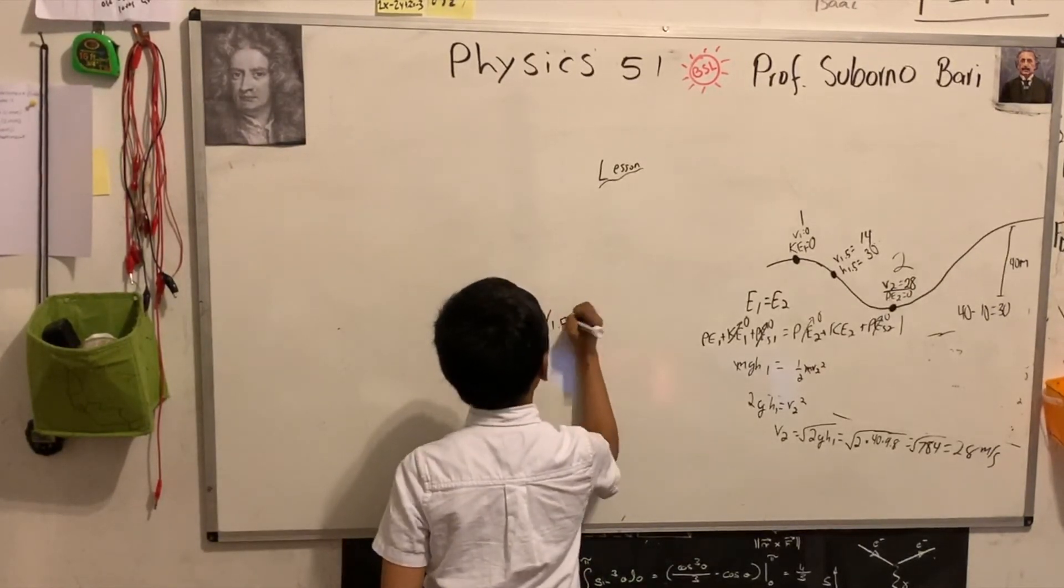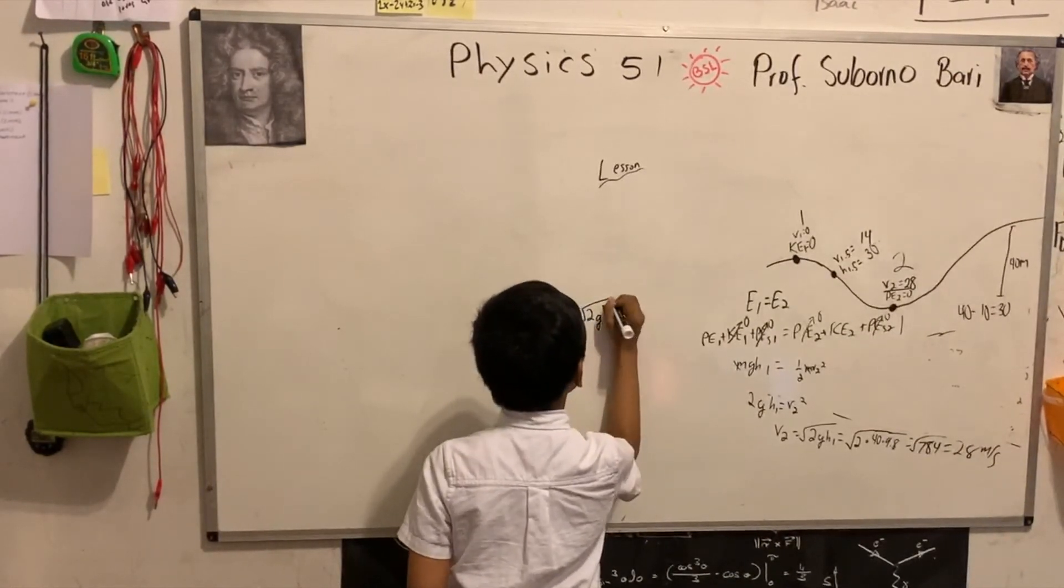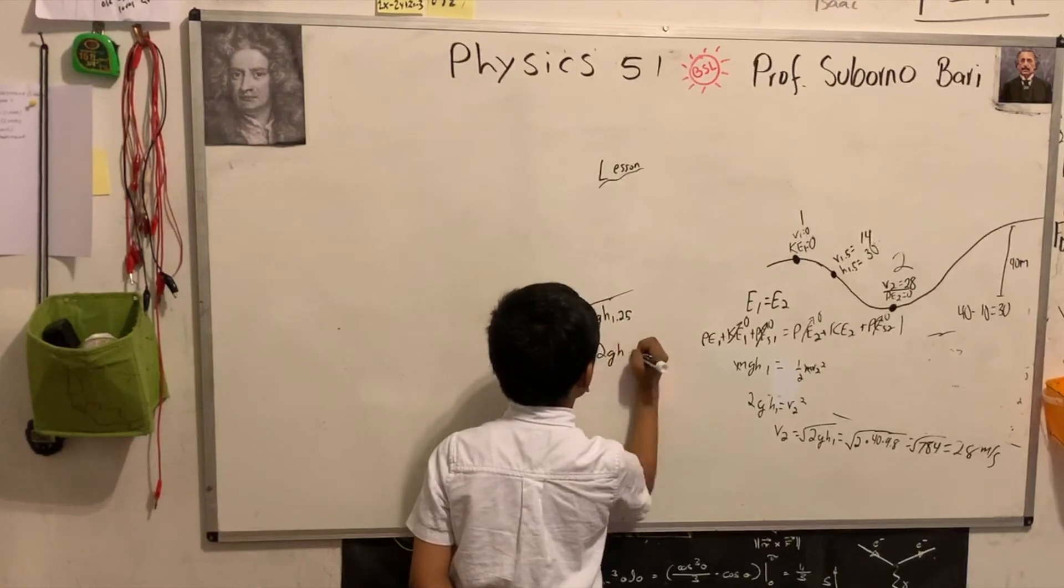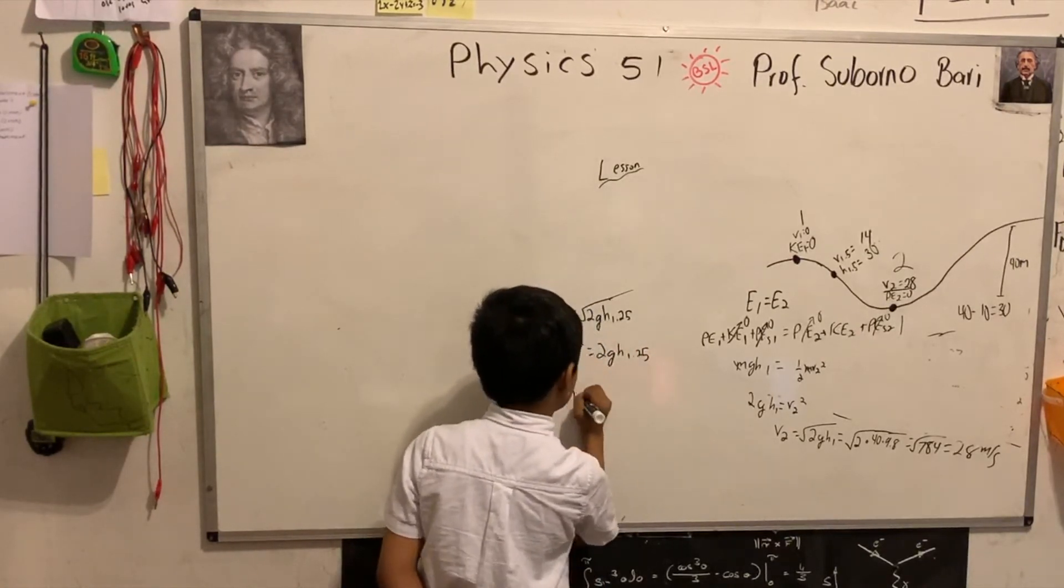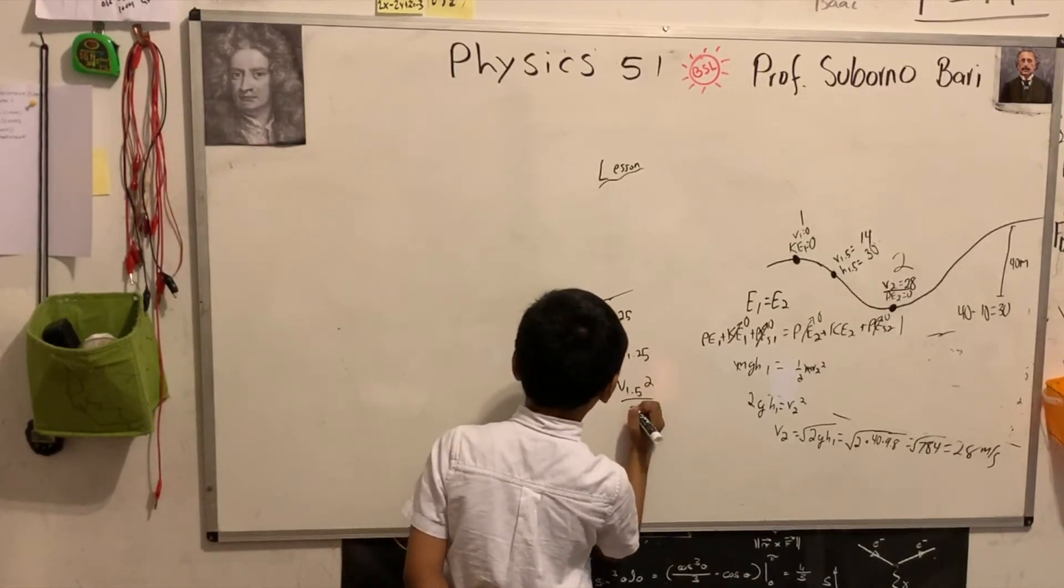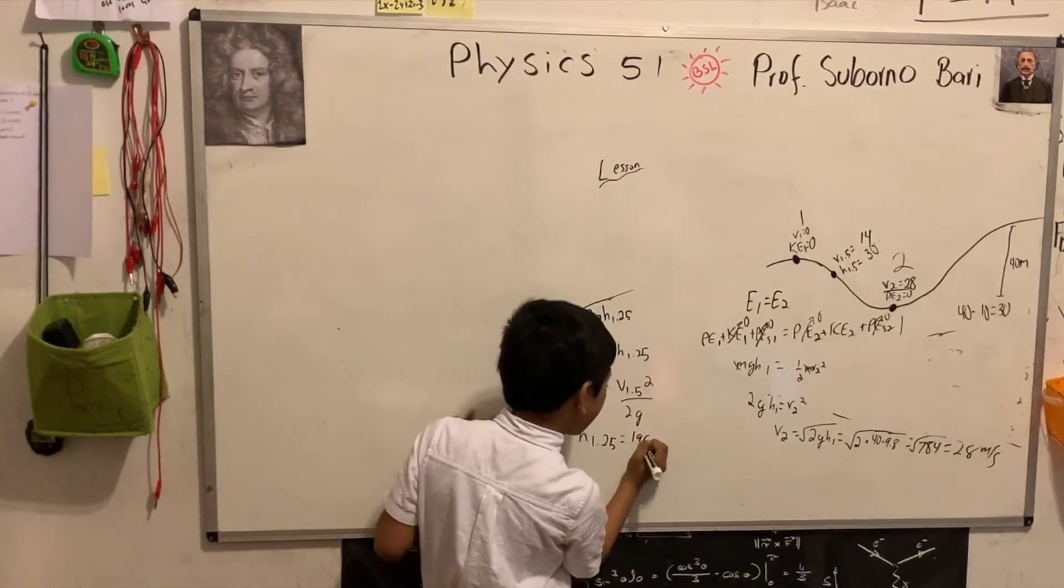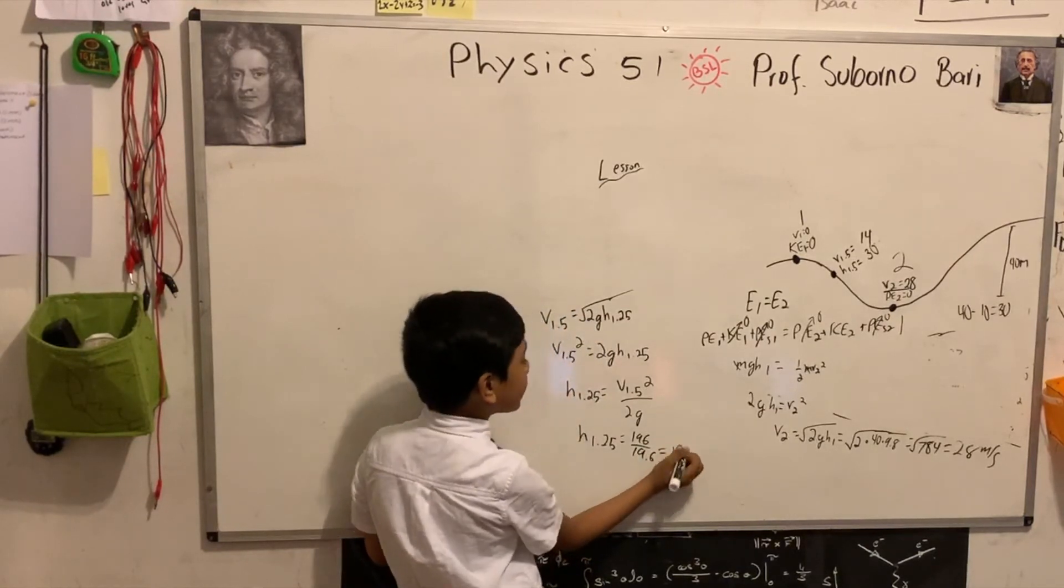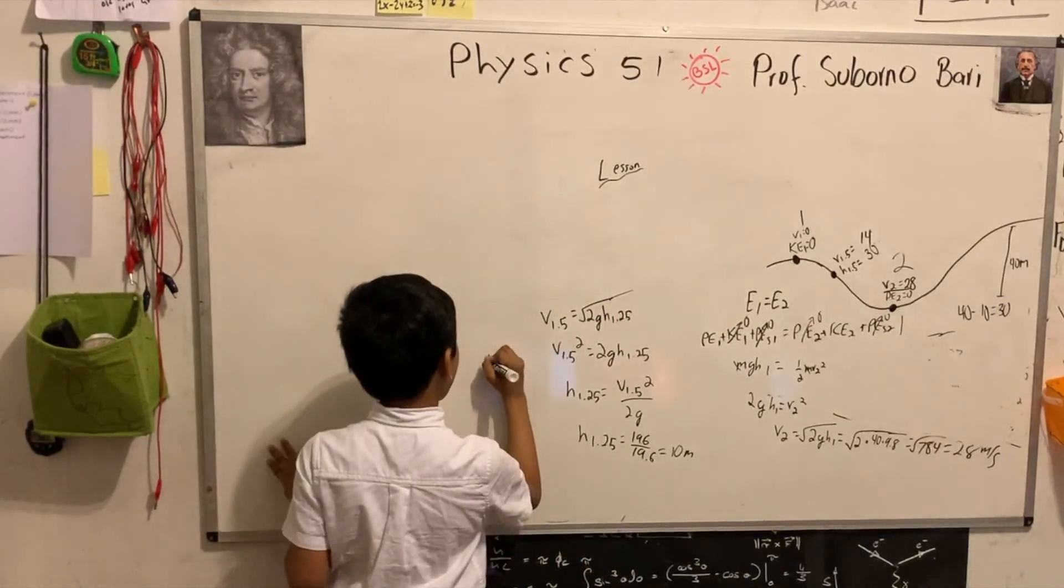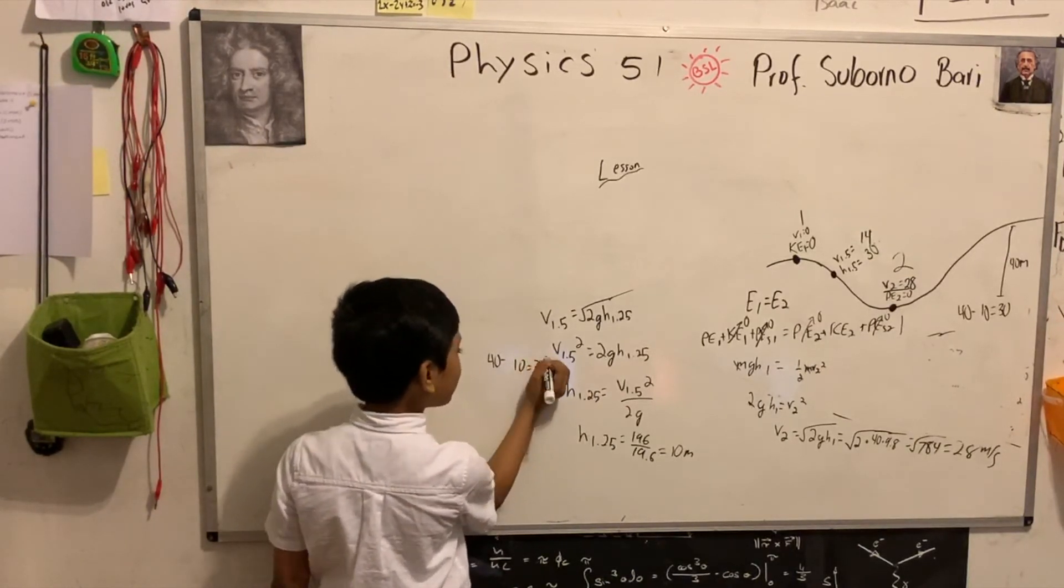So V1.5, we can use this in reverse. So we square both sides. And this is what we get. So 2g, so that gives us 196 divided by 19.6, which is 10, exactly 10. But this is 1.25, so we have to subtract it from the total height, H1. So 40 minus 10 is 30 obviously.